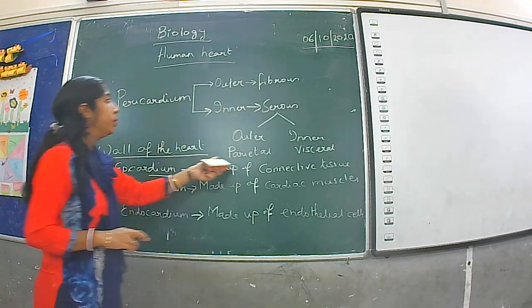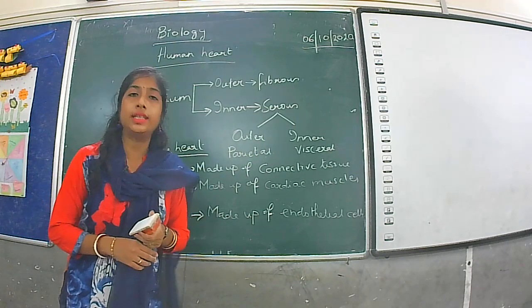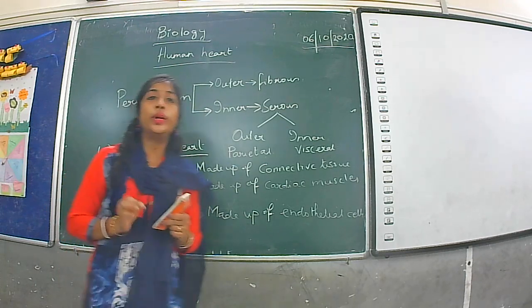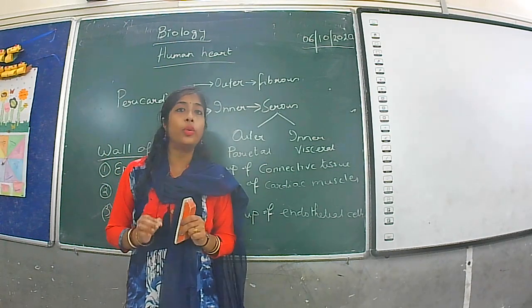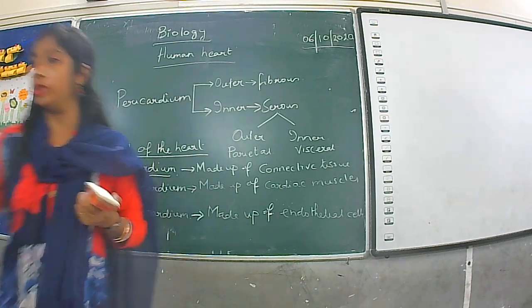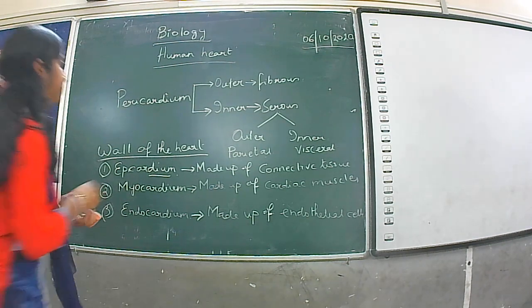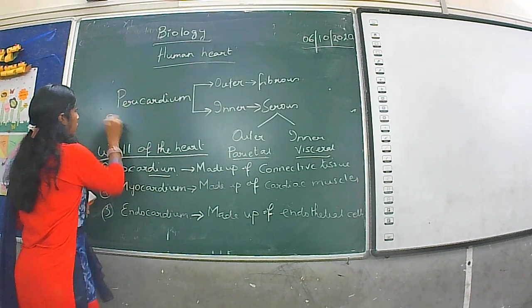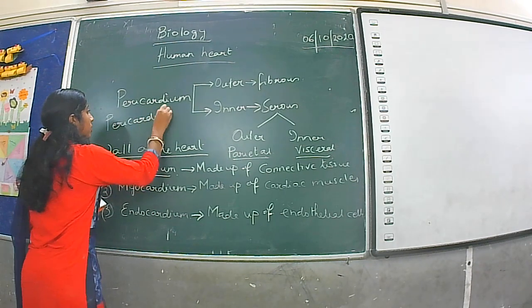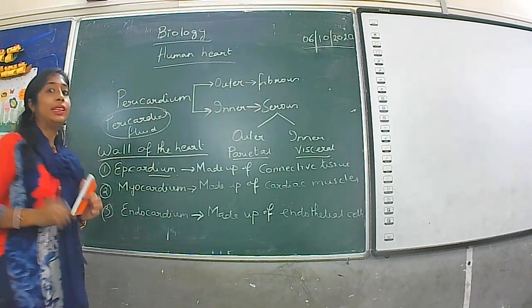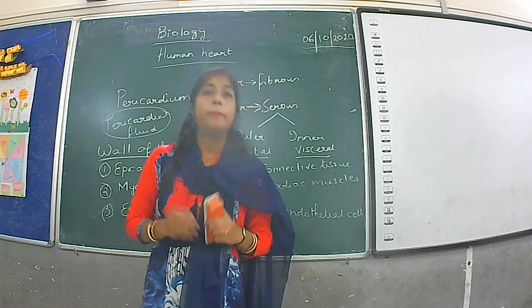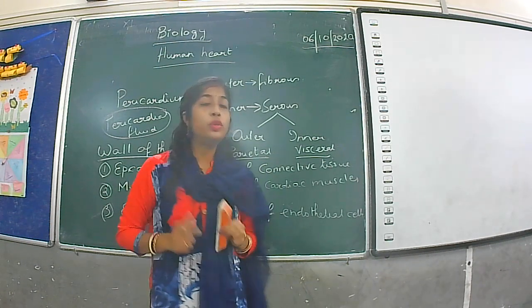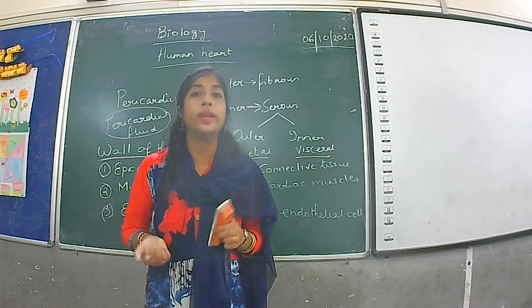The serous pericardium is further classified into outer parietal and inner visceral. In between these two layers, there is a fluid present, known as the pericardial fluid. This fluid is very important because it acts as a shock absorber and also provides a smooth and lubricating surface for the movement of the heart.